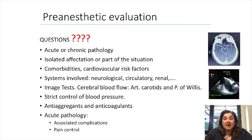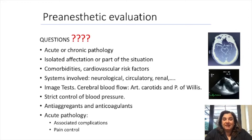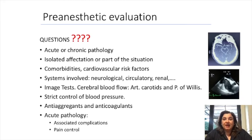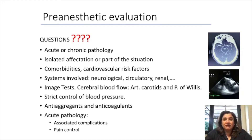Key pre-anesthetic questions include: is it acute or chronic pathology? Is it isolated affectation or part of a broader situation? What are the comorbidities, the systems involved? Analyzed image tests, strict control of blood pressure, drugs of the patient like antiaggregants and anticoagulants. If it's acute pathology, what are associated complications? And really important: pain control.